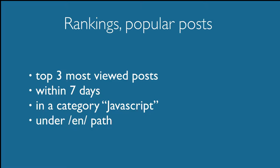Case: offloading ranking and popular posts. We want to show the popular posts below an article — the top three most-viewed posts within the last seven days in a category like JavaScript, or under a path like example.com/en/. You can do that with WordPress too, but to achieve this only inside WordPress, the plugin needs to log every access: the timestamp, the URL or post ID. Every access adds one new row to your database. If you get a million accesses a day, then a million rows — and that's really bad for scalability.